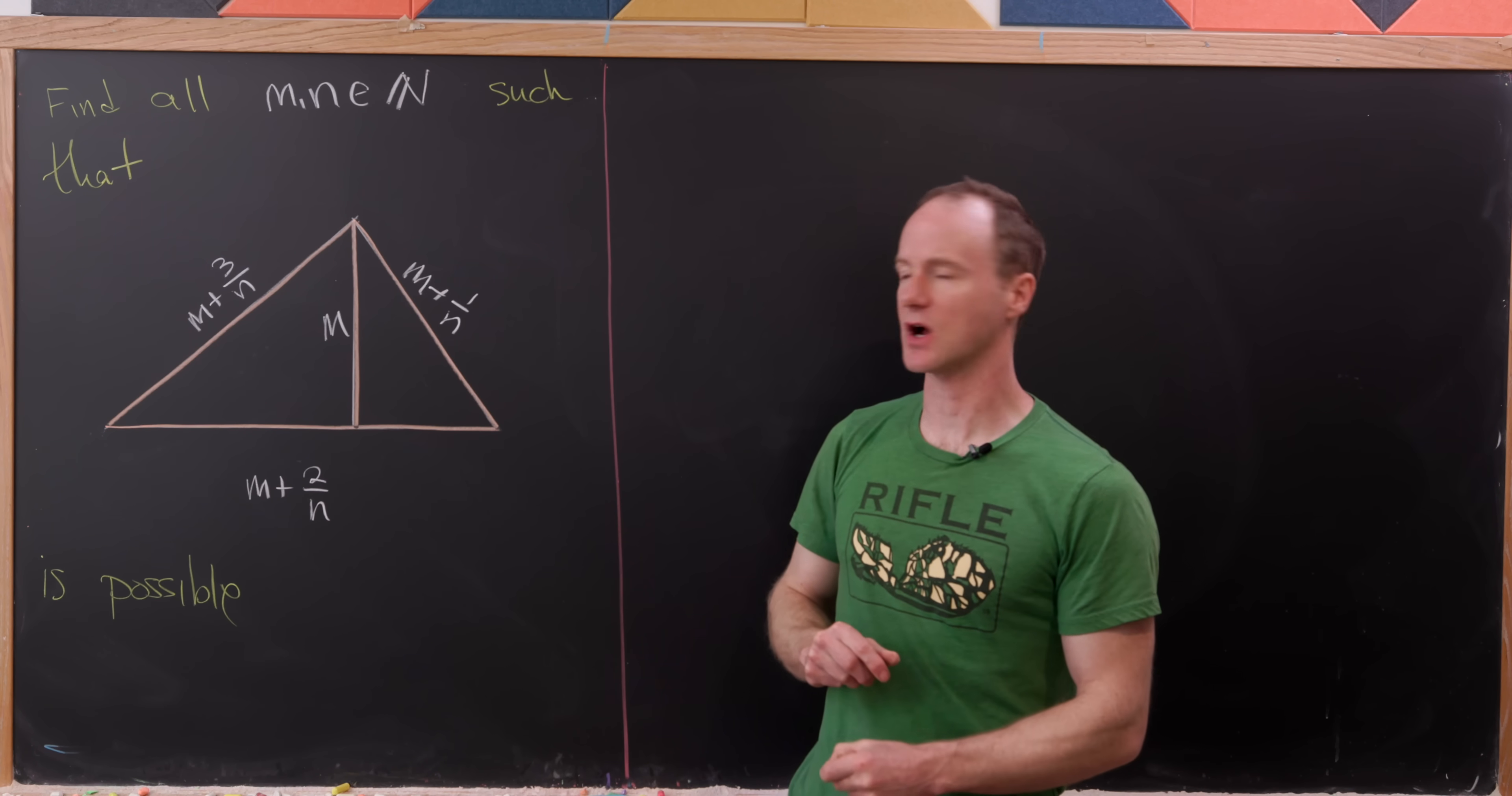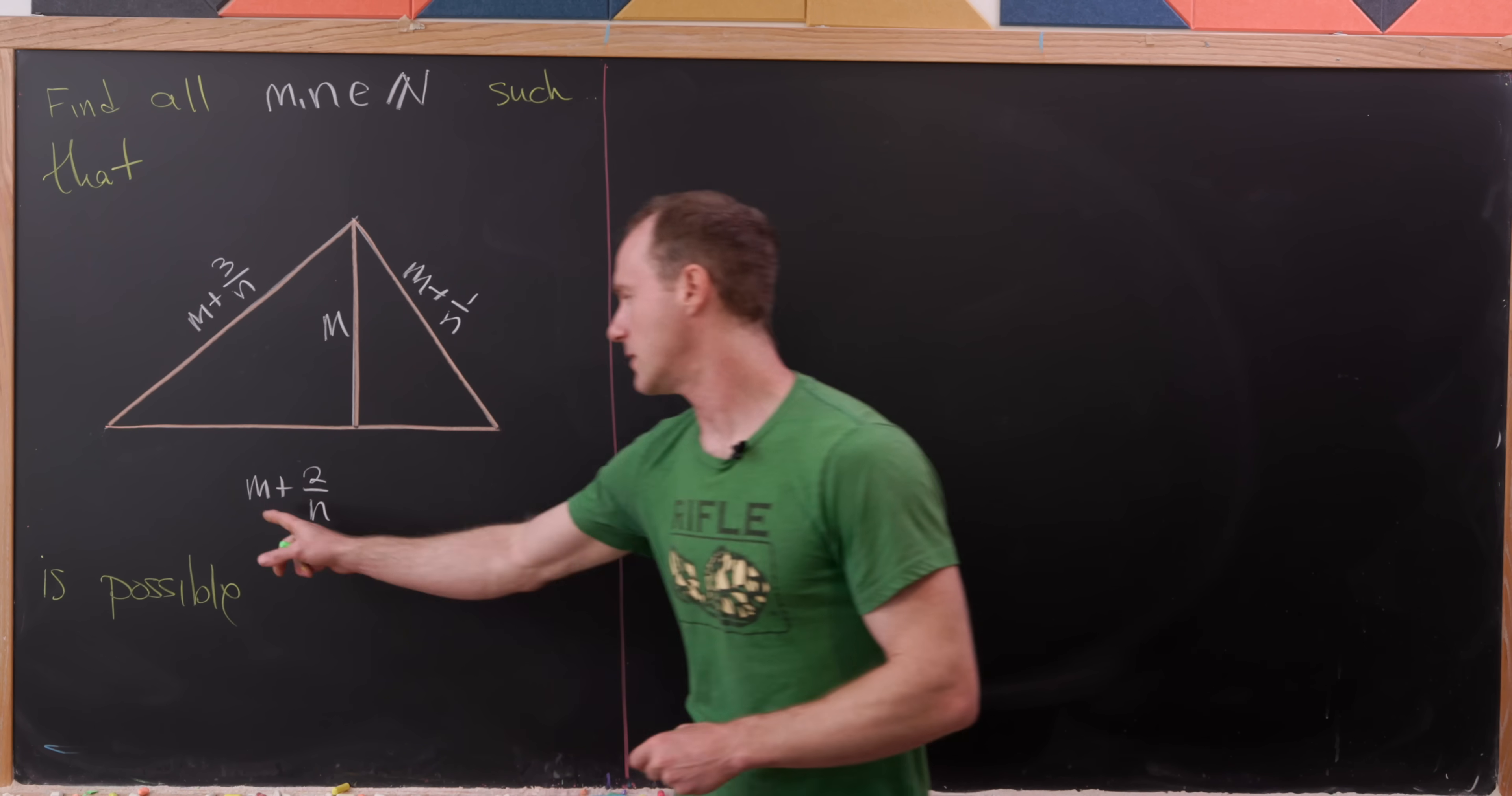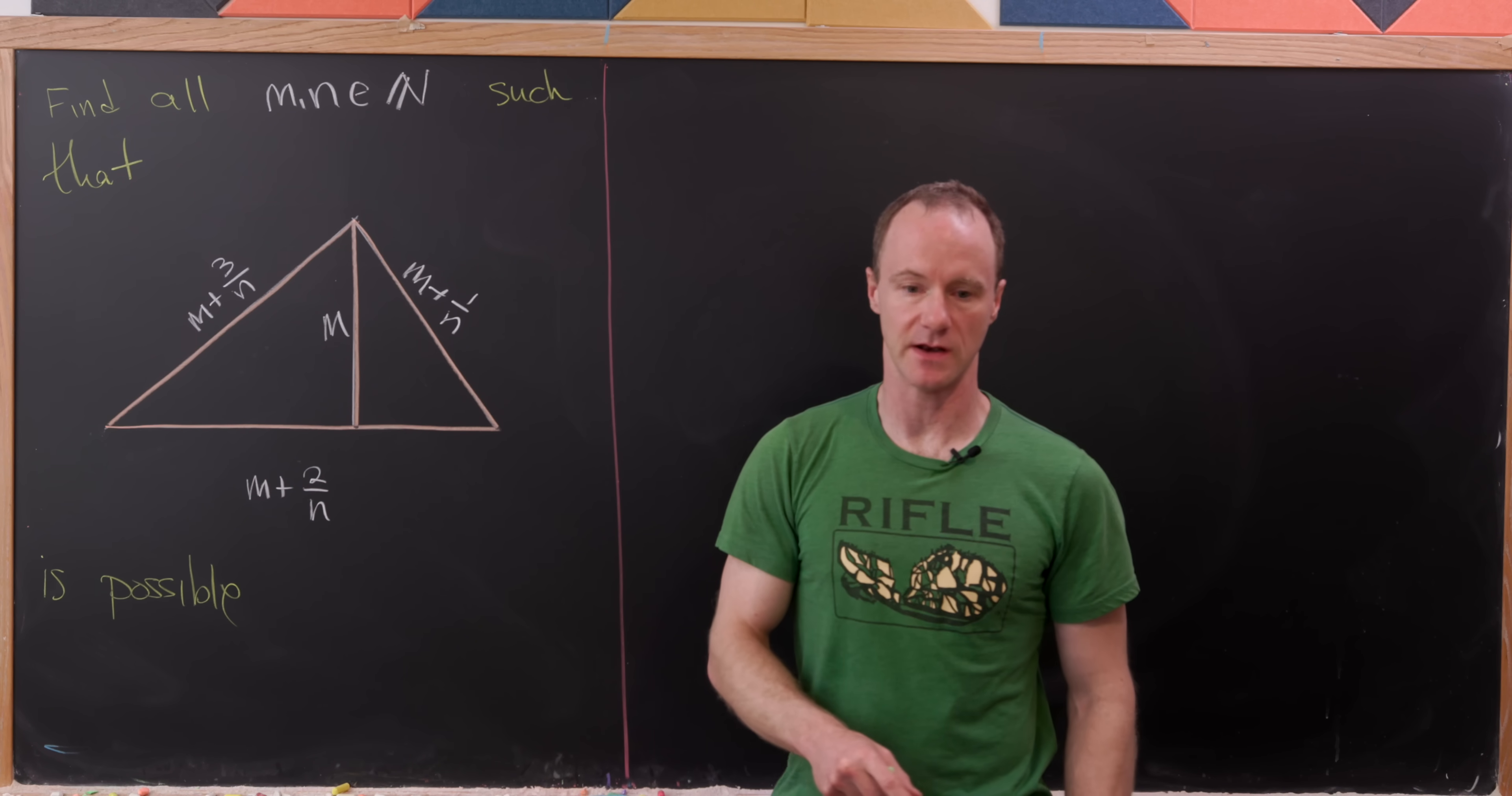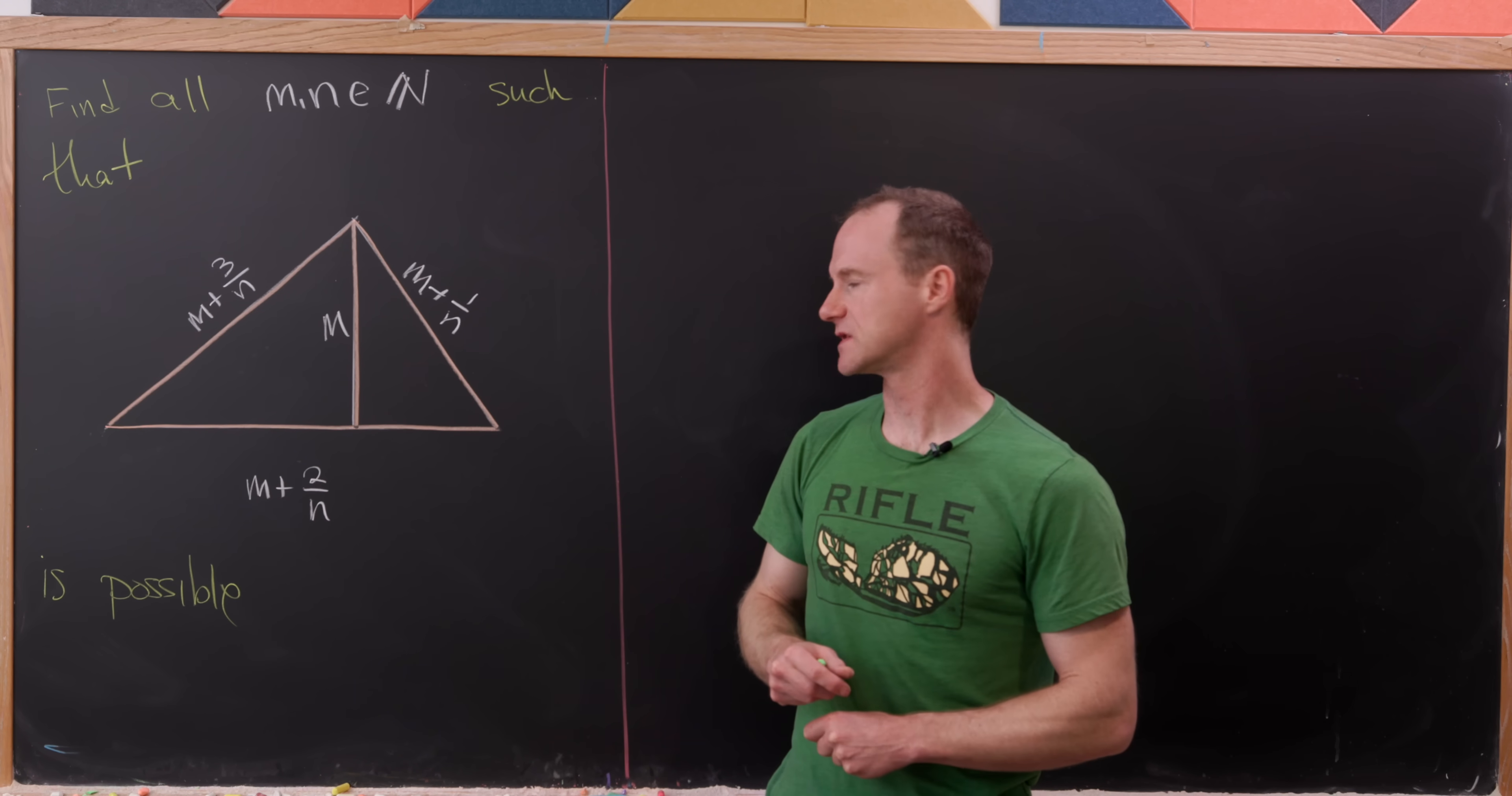Let's look closely at this triangle. So notice it's got side lengths of m plus 1 over n, m plus 2 over n, and m plus 3 over n. And then its altitude is m. So how could we do this?